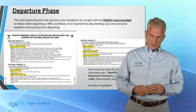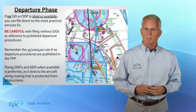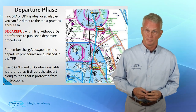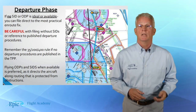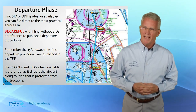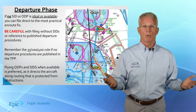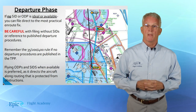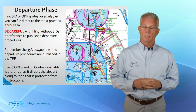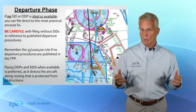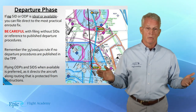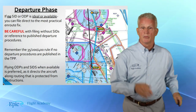Next we'll check for SIDs. If no SID or ODP is in place, we can fly direct to the most practical en route fix. The departure phase is complete when we connect with the en route structure. We connect in a variety of ways: if you're flying a SID, it will connect you to an en route fix or waypoint. If you're not on a SID, you may file to an en route fix or waypoint, or you may be vectored onto an airway or to an en route fix or waypoint. Discuss all these options with your CFII.